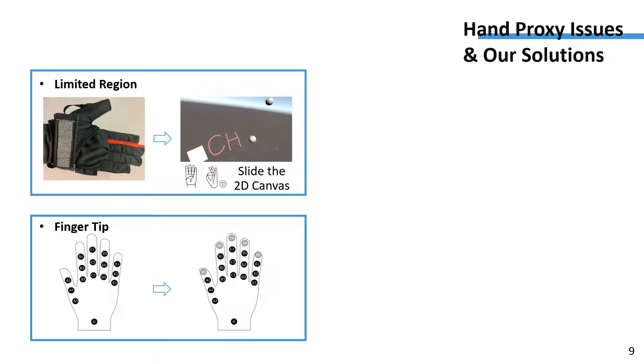Using a hand as a canvas brings several problems. For example, the size of the canvas hand causes a limited workspace for drawing. To expand this region, we allow users to pan the canvas with a pan gesture.